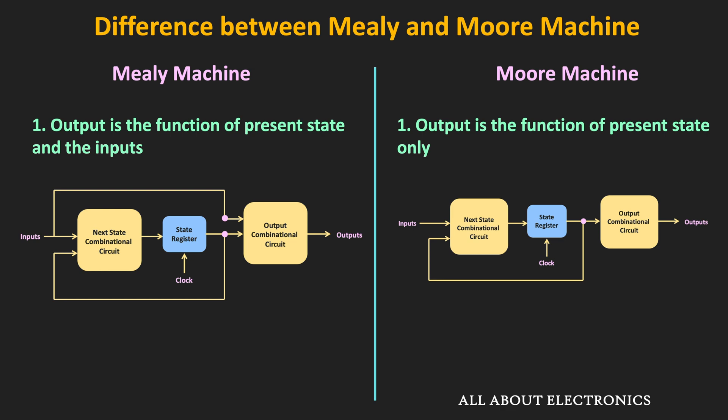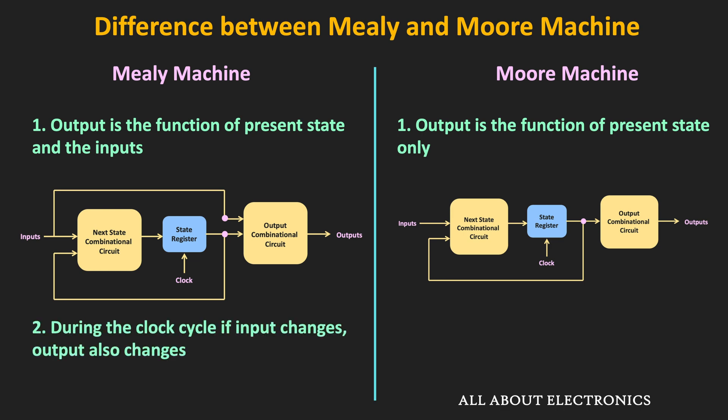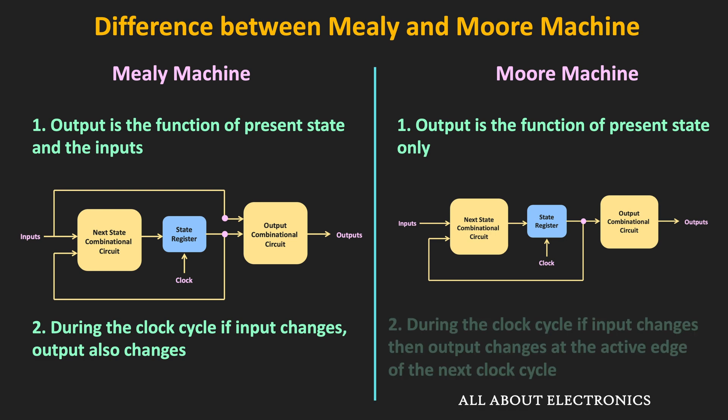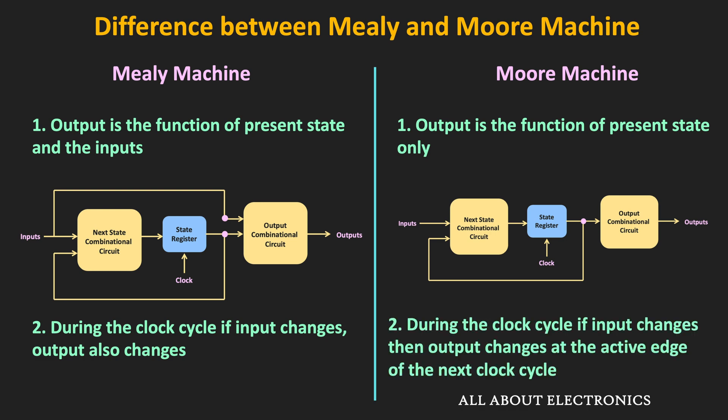In the Mealy machine, since the output is a function of the input, if the input changes during the clock cycle, then the output of the machine also changes immediately. While in the Moore machine, if the input changes during the clock cycle, the output will change at the active edge of the next clock cycle, because the output depends only on the present state of the memory element, and that state changes at the next clock edge.